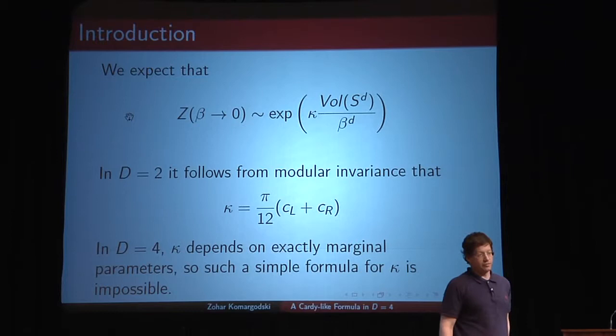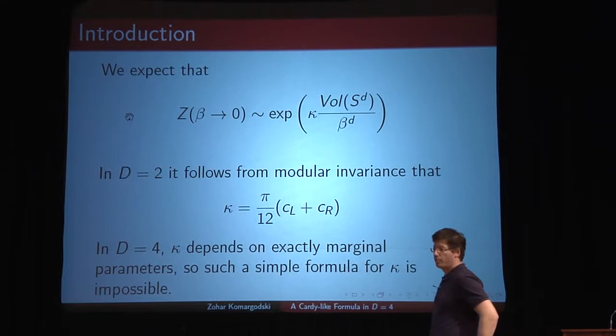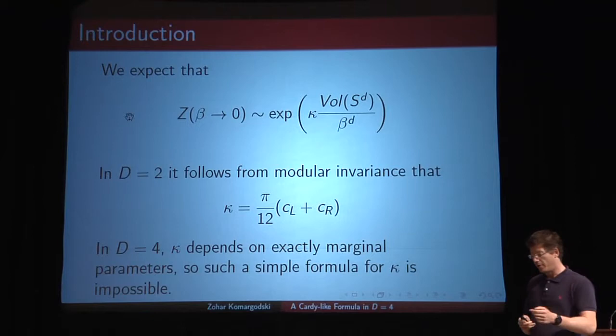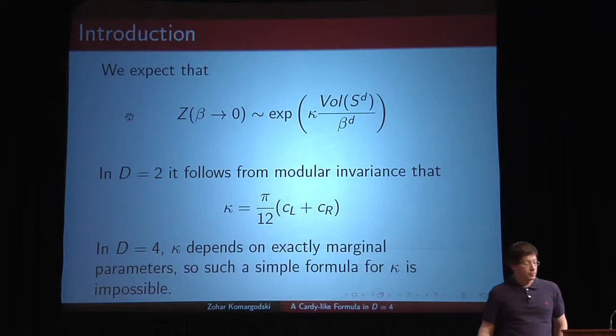This coefficient kappa in two dimensions is very simple — that's the Cardy formula, completely fixed by the central charges of the underlying two-dimensional CFT. In higher dimensions, kappa cannot be so simple; it cannot be fixed by the anomalies of the underlying four-dimensional theory, because we know of many cases where it depends on exactly marginal parameters, while the known anomalies do not. So a simple formula like Cardy's seems impossible in higher dimensions.